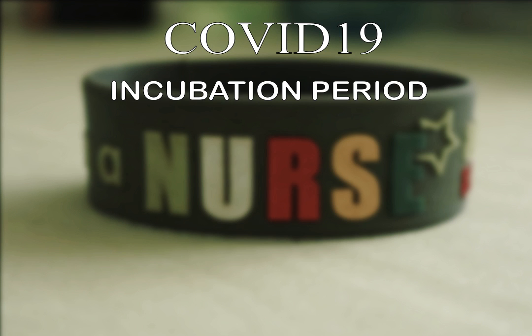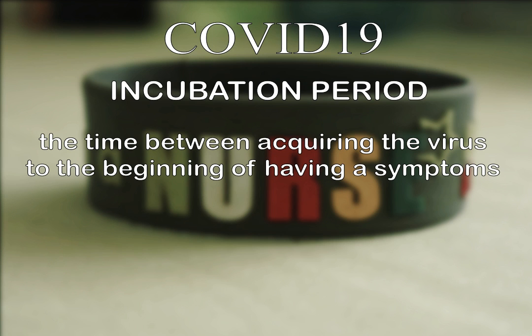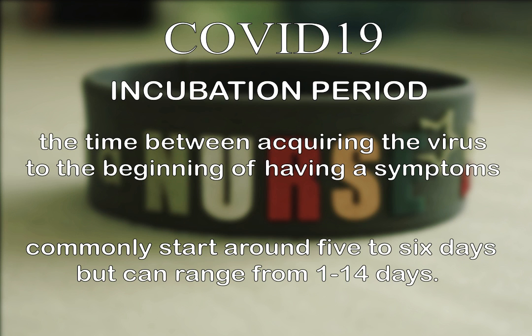Incubation period. What is incubation period? It is the time between acquiring the virus, or when it already entered your body, to the beginning of having symptoms. According to WHO, the incubation period of coronavirus from the time of exposure and being symptomatic commonly starts around 5 to 6 days, but can range from 1 to 14 days. That's the reason why they require everyone who came from outside the country to perform self-quarantine for about 14 days.